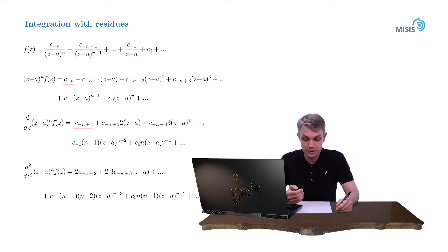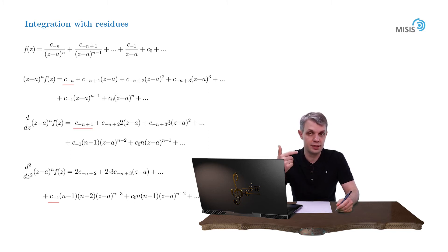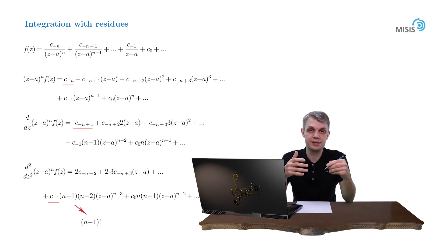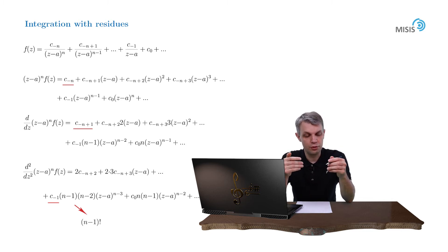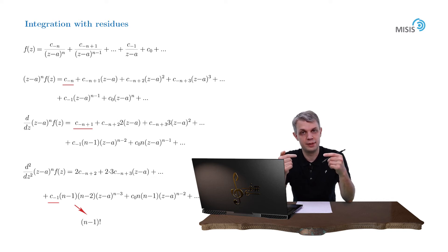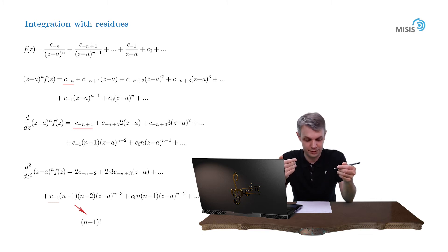Now let's try to see the pattern. Look at term c_{-1}: after the first differentiation it acquired the prefactor n minus 1, after the second one n minus 2. So after n minus 1 differentiations it will be (n-1) factorial. Also, each differentiation removes the first term on the right-hand side, so after n minus 1 differentiations all n minus 1 leading terms will be removed. That means c_{-1} will occupy the first place, and its power — initially n minus 1 — will become zero.